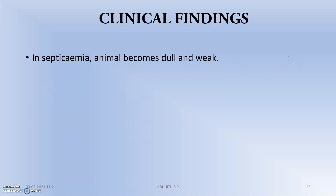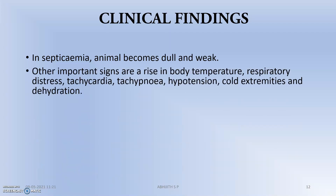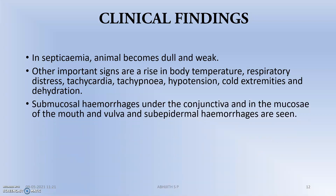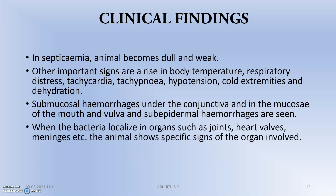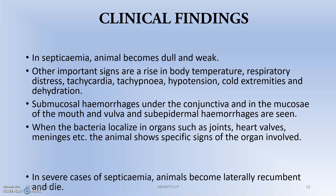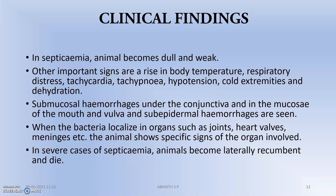Moving to clinical findings: in septicemia, the animal becomes dull and weak. Other important signs include rise in body temperature, respiratory distress, tachycardia, tachypnea, hypotension, cold extremities, and dehydration. Submucosal hemorrhages under the conjunctiva and in the mucosa of the mouth and vulva, as well as sub-epidermal hemorrhages, are seen. When bacteria localize in organs such as joints, heart valves, or meninges, the animal shows specific signs of the organ involved. In severe cases, the animal becomes laterally recumbent and will die soon.